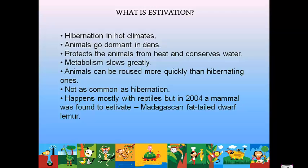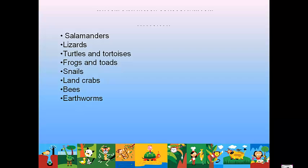Estivation is not as common as hibernation — more animals hibernate than estivate. It mostly occurs in reptiles and desert animals. The first estivating mammal was discovered in 2004: the Madagascan fat-tailed dwarf lemur. Animals that estivate include salamanders, lizards, turtles and tortoises, frogs and toads, snails, land crabs, bees, earthworms, and that Madagascan lemur.